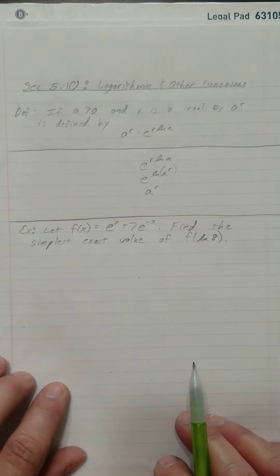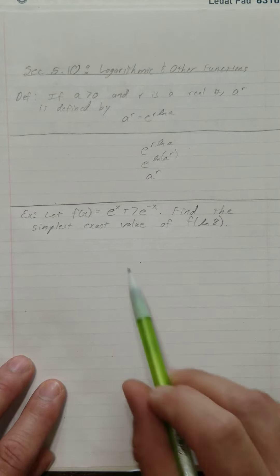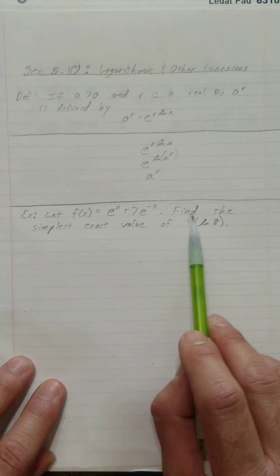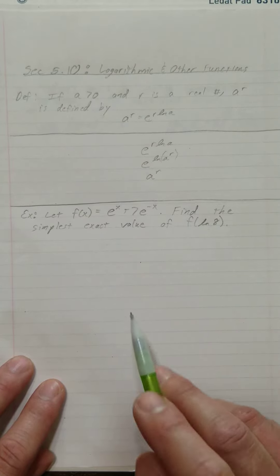Now, we're going to use that to simplify expressions whenever we do some work. Let's look at this example. Let f of x be this function. Find the simplest exact value of f evaluated at the natural log of 8.